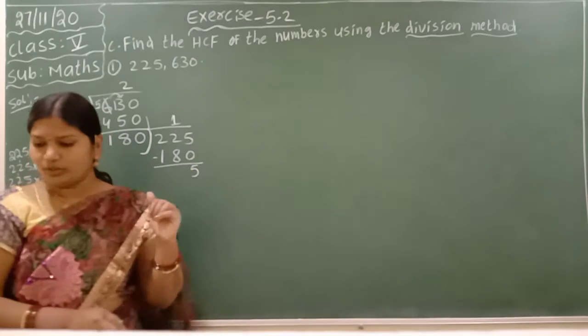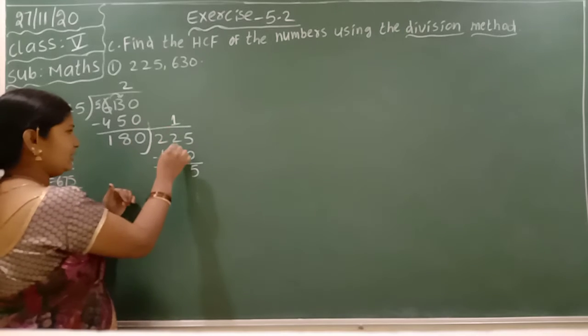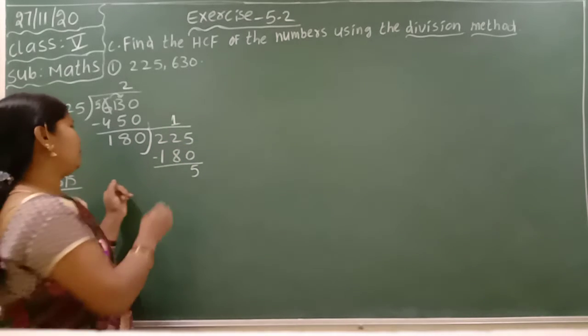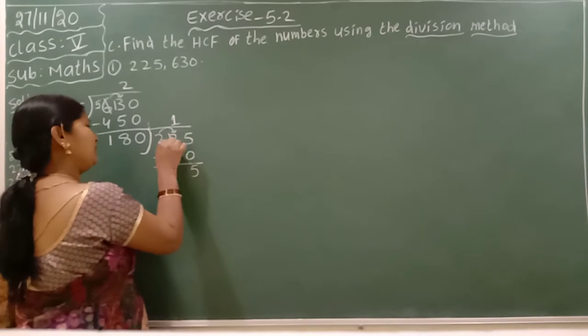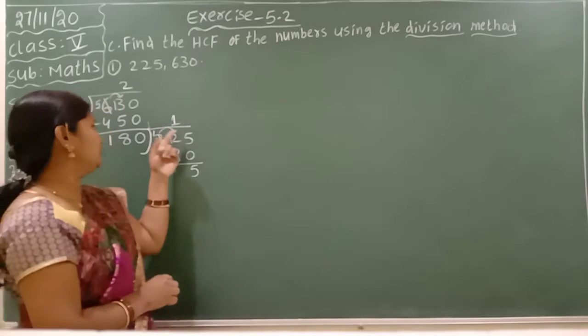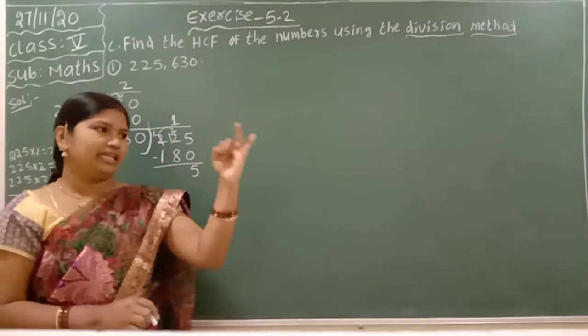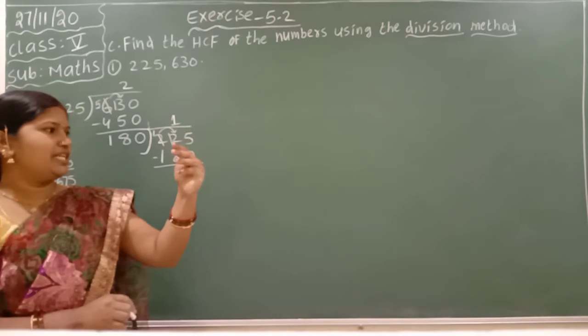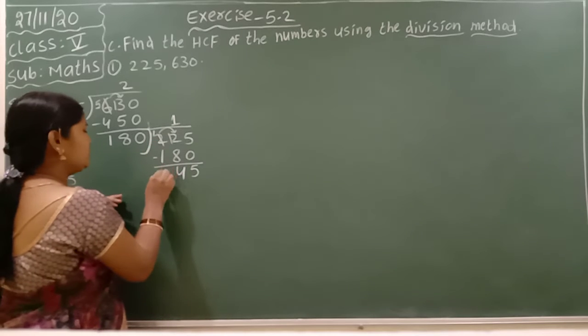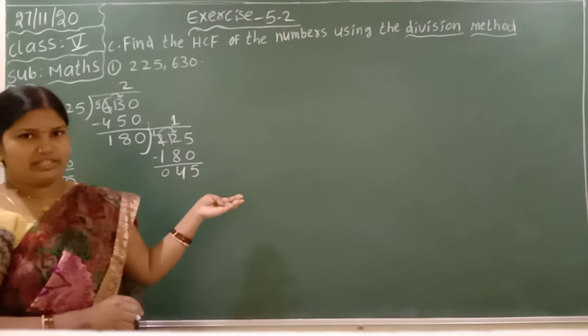Keep minus and do the subtraction: 5 minus 0 is 5. 2 minus 8 is not possible. Take regrouping - this becomes 12, this becomes 1. 12 minus 8 - count from 8 to 12 - that's 4. 1 minus 1 is 0. Here, 45 is the answer.